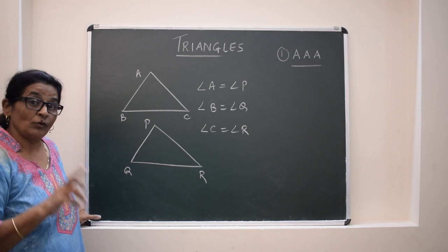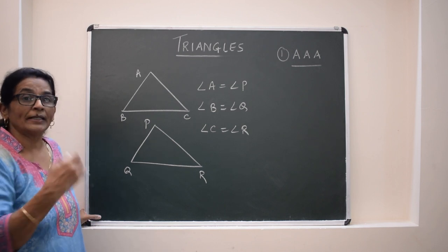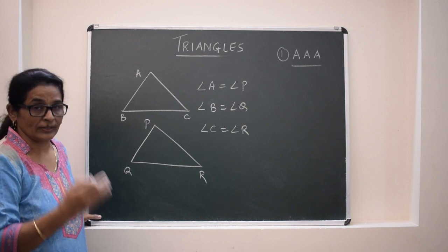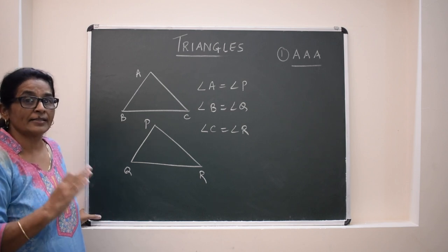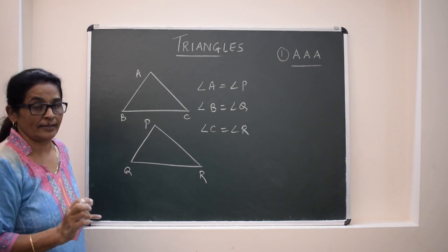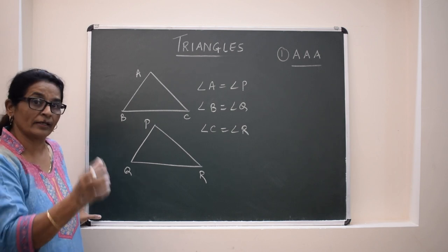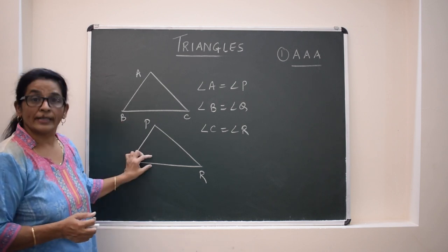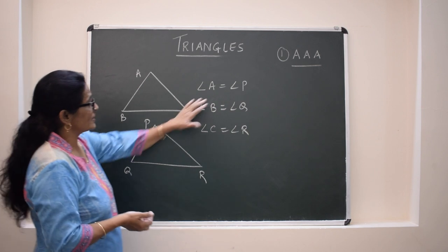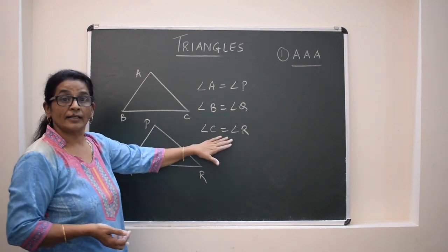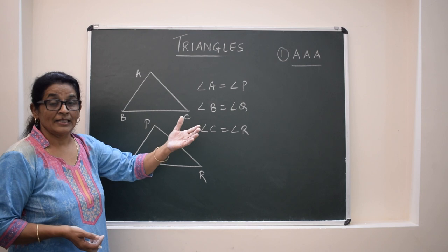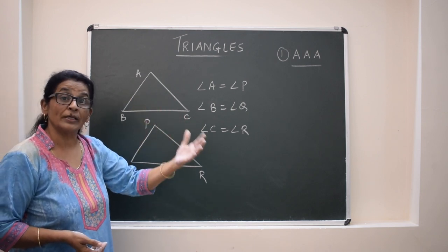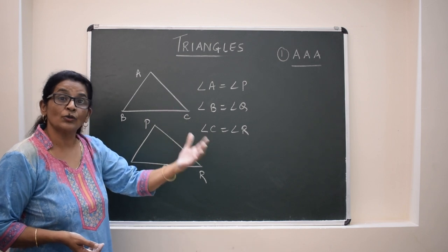We can say that if two angles are equal, automatically the third angle will be equal. So normally we say it is AAA, and AA is the corollary — a part of that. If two angles are equal, automatically the third angle will be equal. So if we are comparing two triangles and their corresponding angles are equal, then the triangles will be similar, and so their corresponding sides will be in the same ratio or proportion.